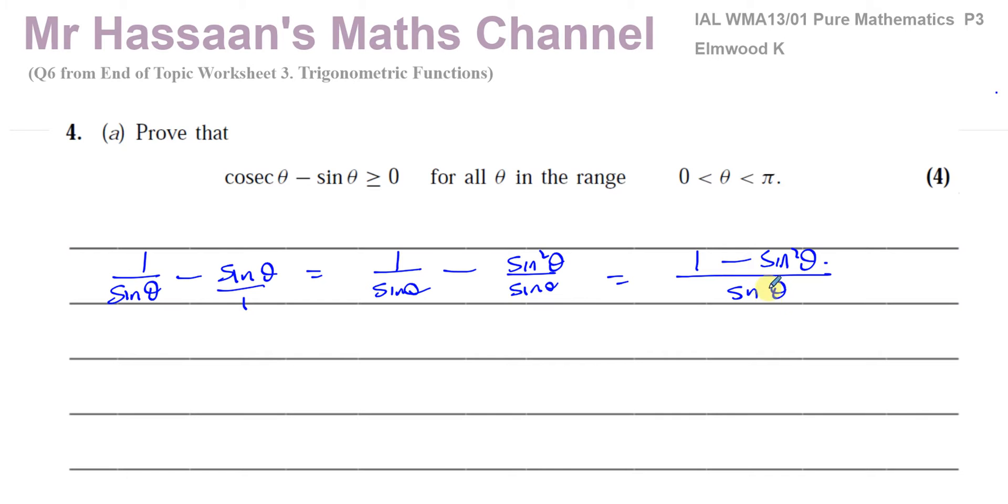So now we know that 1 minus sin²θ is the same as cos²θ. Because we know the identity sin²θ plus cos²θ is equal to 1. So therefore, 1 minus sin²θ is the same as cos²θ. So I can write this as cos²θ over sin θ. Now, for me, that's enough. Because I know that cos²θ is like saying cos θ all squared. That's what it means.